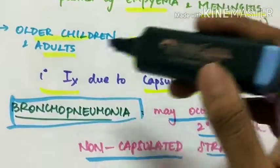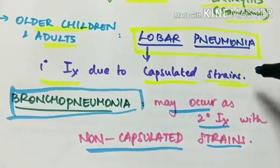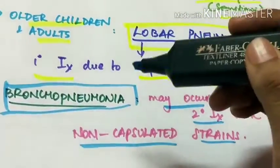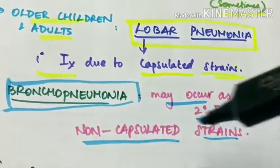Bronchopneumonia may occur as secondary infection with non-capsulated strains. So lobar pneumonia occurs as primary infection due to capsulated strains like type B Haemophilus influenzae. And bronchopneumonia may occur as secondary infection with non-capsulated strains.